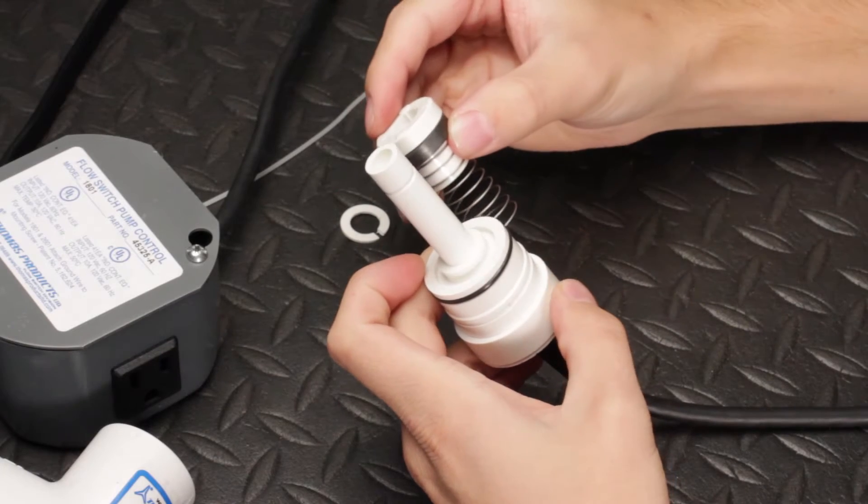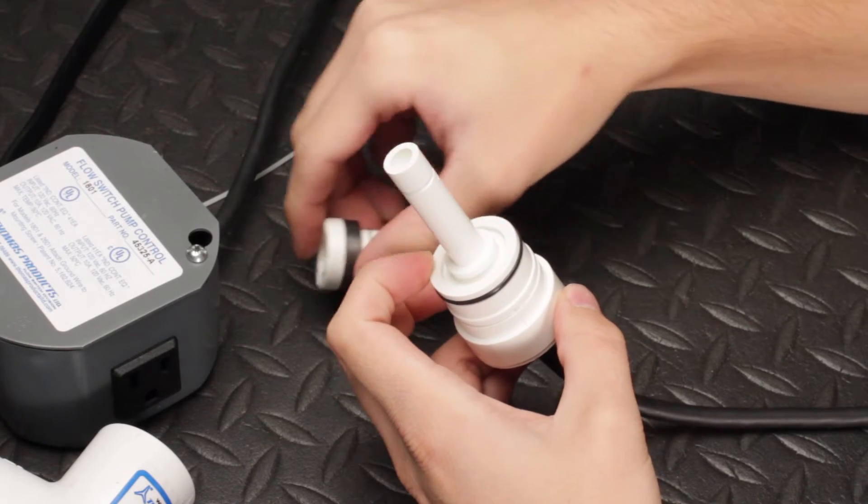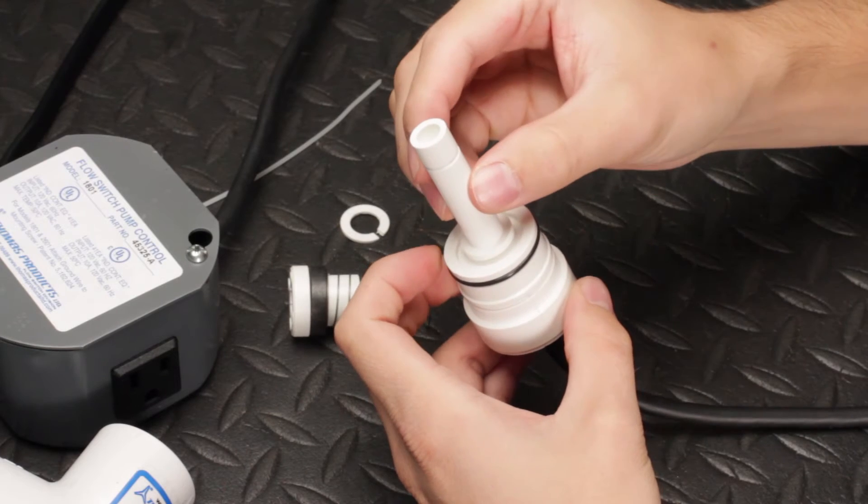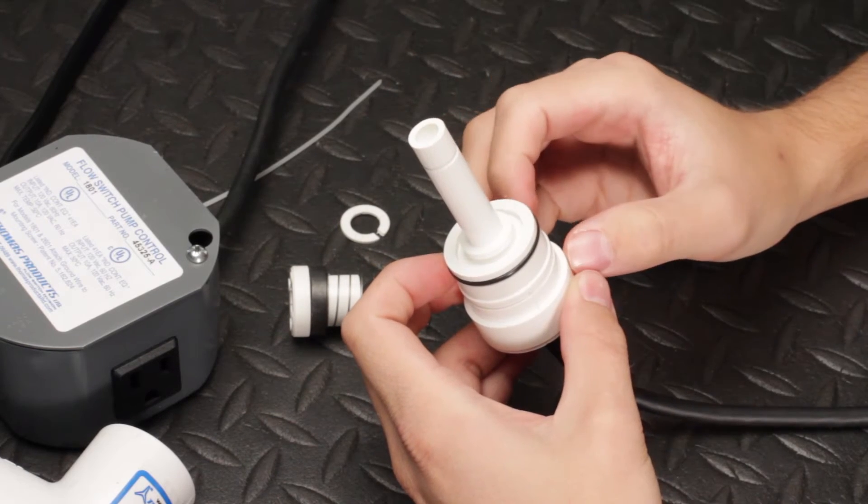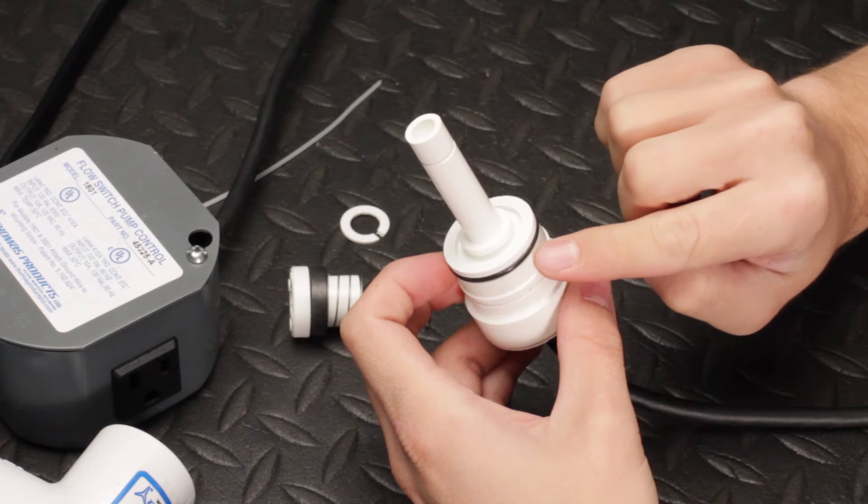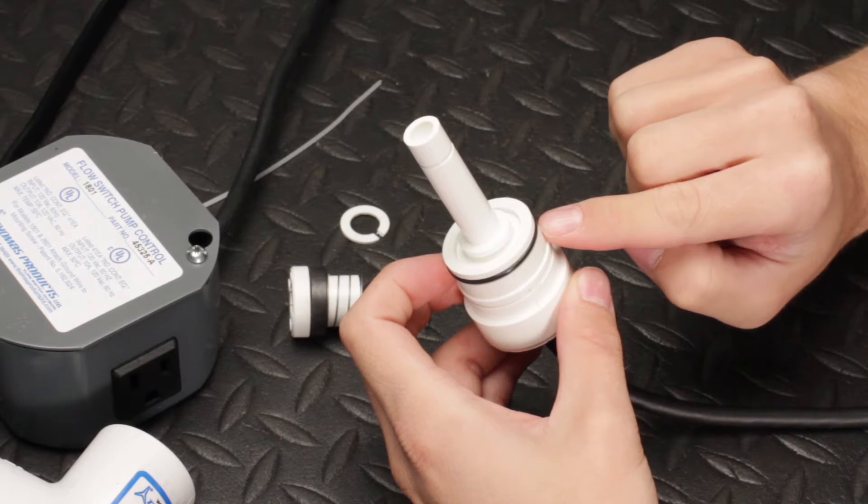Now you can clean the bonnet if debris or iron buildup is present using mild soap and water and a soft toothbrush if needed. Next, make sure the o-ring is nice and clean.